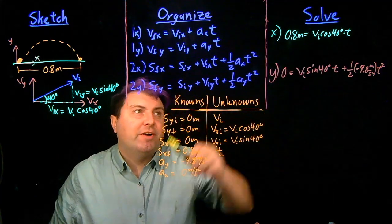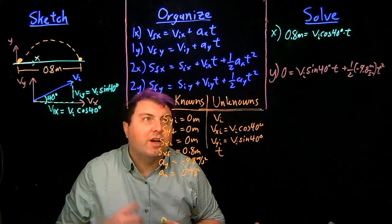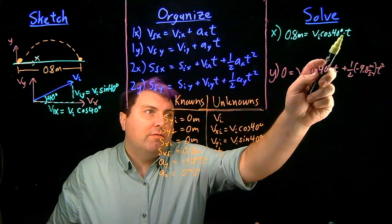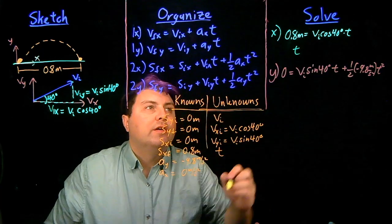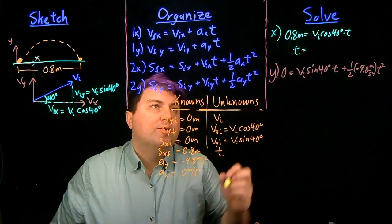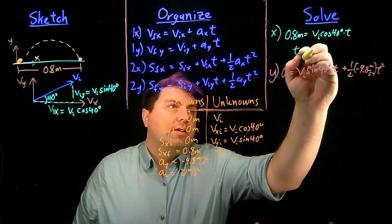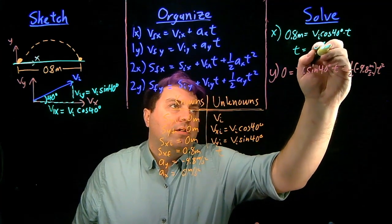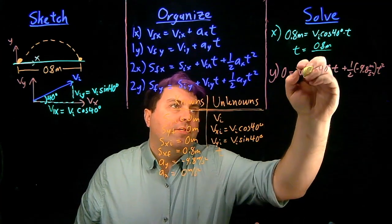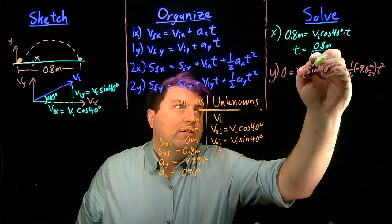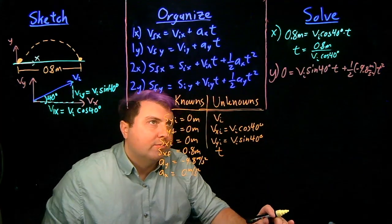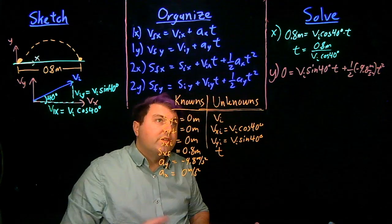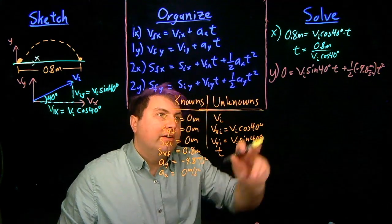This equation looks very right for substitution, because we've got just this t once right here. So we can write t being equal to 0.8 meters over vi cosine of 40 degrees. So, that's great, that's looking good here.